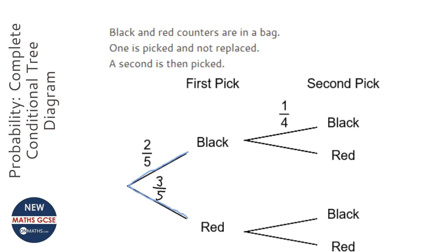Now something this question doesn't tell you is how many black and how many red. We know that the chance of getting a black is two over five, but looking at the second pick, the only way for it to go down to one over four is if there's two blacks and three reds.